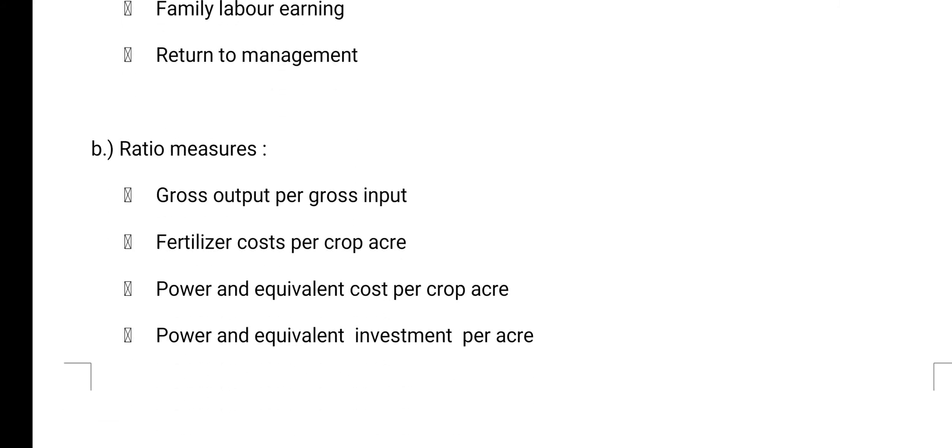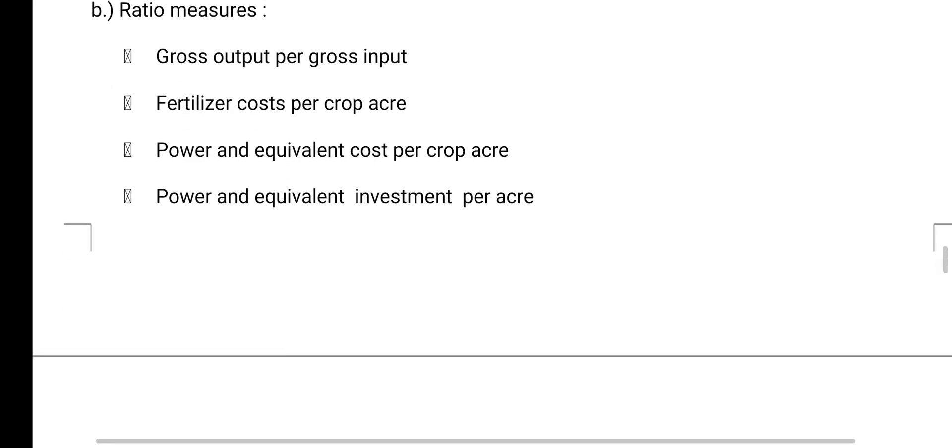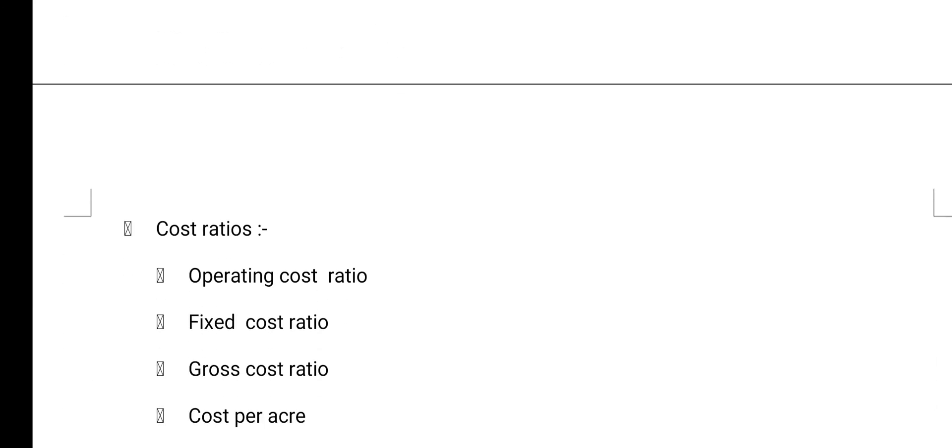The second is ratio measures. It includes gross output per gross input, fertilizer cost per crop acre, power and equivalent cost per crop acre, power and equivalent investment per acre.